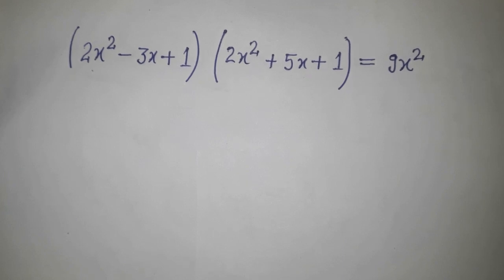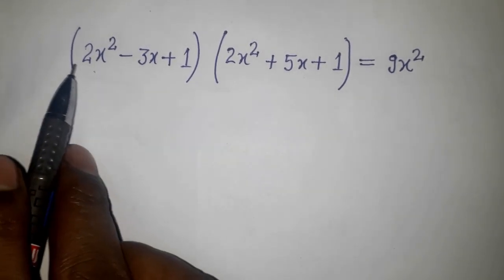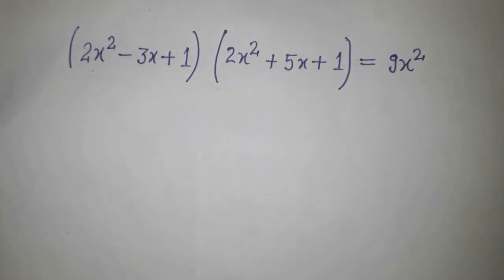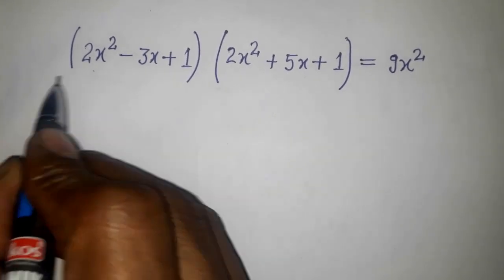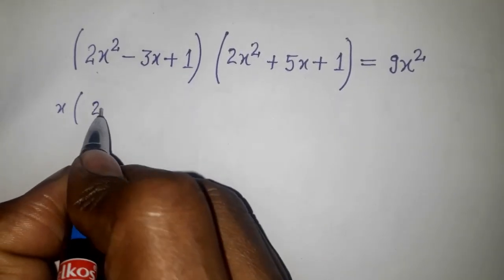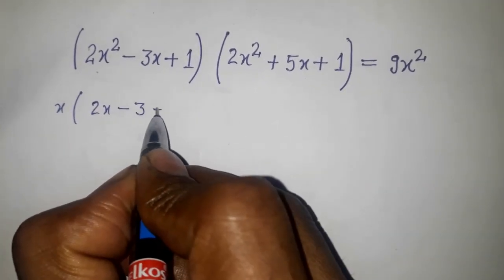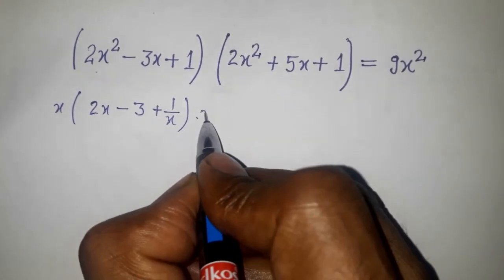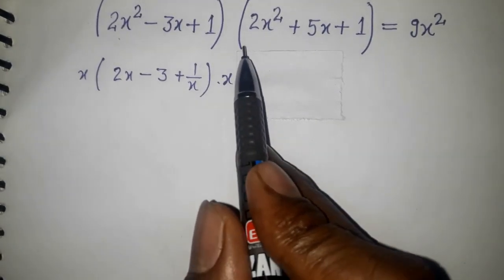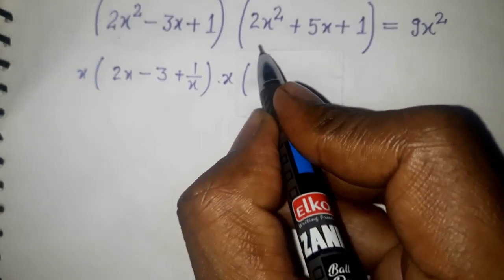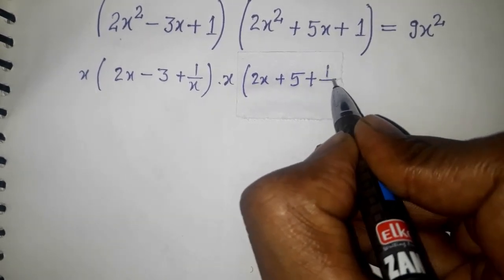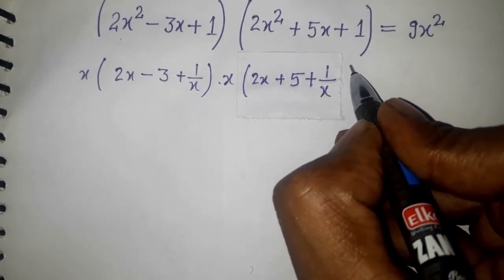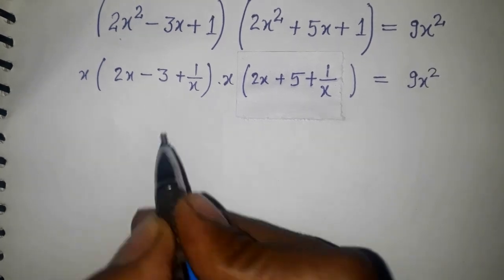Since x² is present, we can take x common from the first bracket and x common from the second bracket. Taking x common from the first bracket gives us x(2x - 3 + 1/x), and taking x common from the second bracket gives us x(2x + 5 + 1/x). On the right side we have 9x².